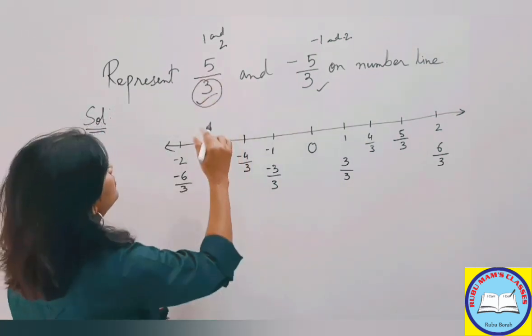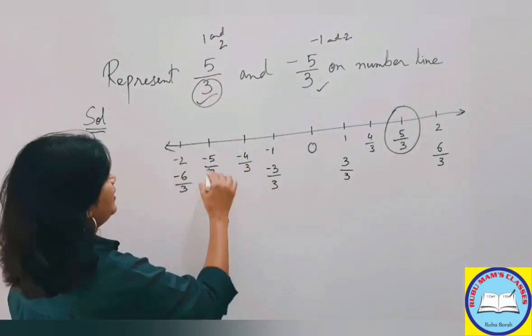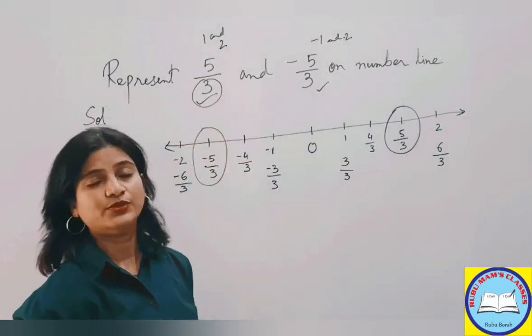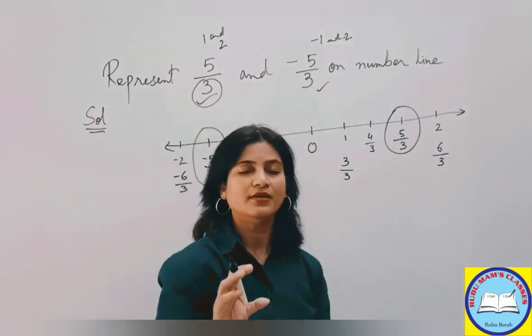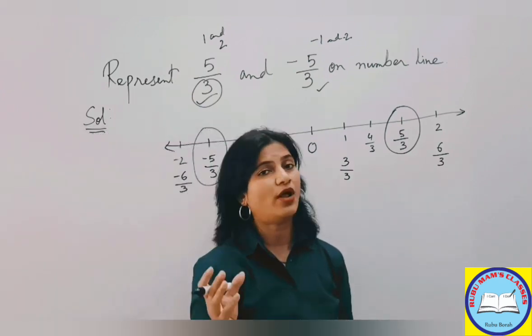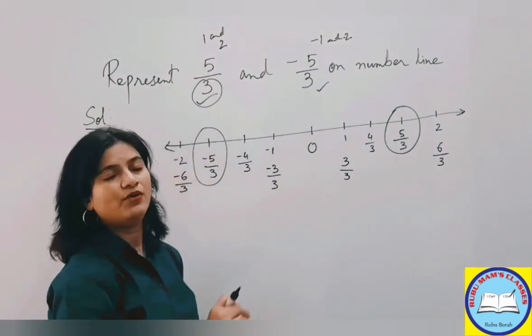So now your required rational number, one is here and the other one is here. Got it? So this is how we need to show rational numbers on a number line. Only you need to remember whether the numerator is smaller or greater. Your numerator was greater, so this is how we did it.